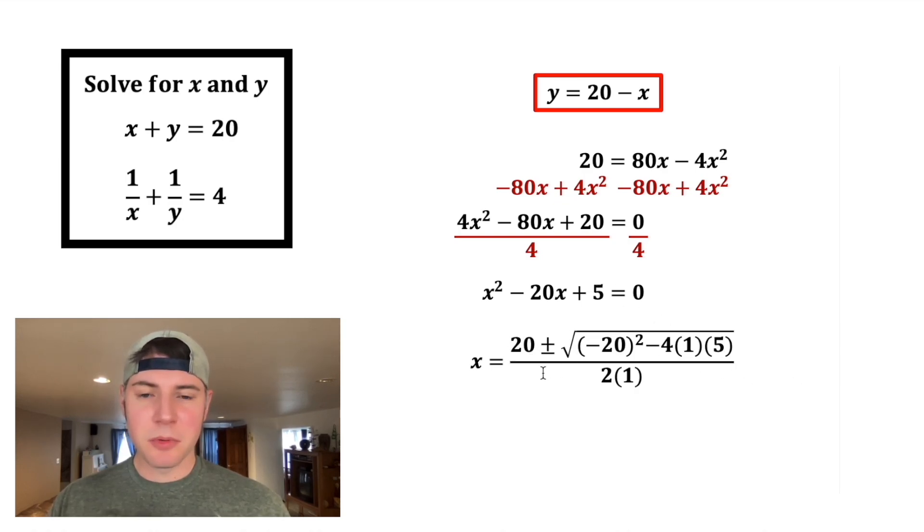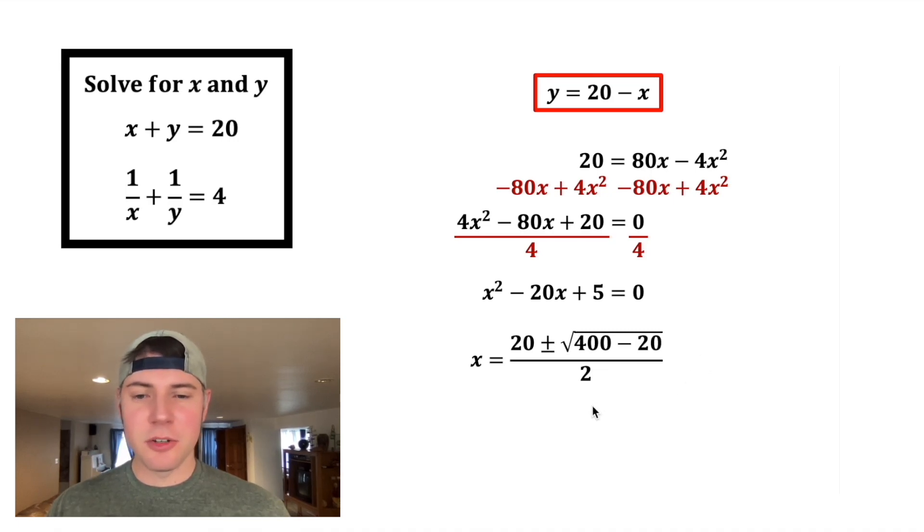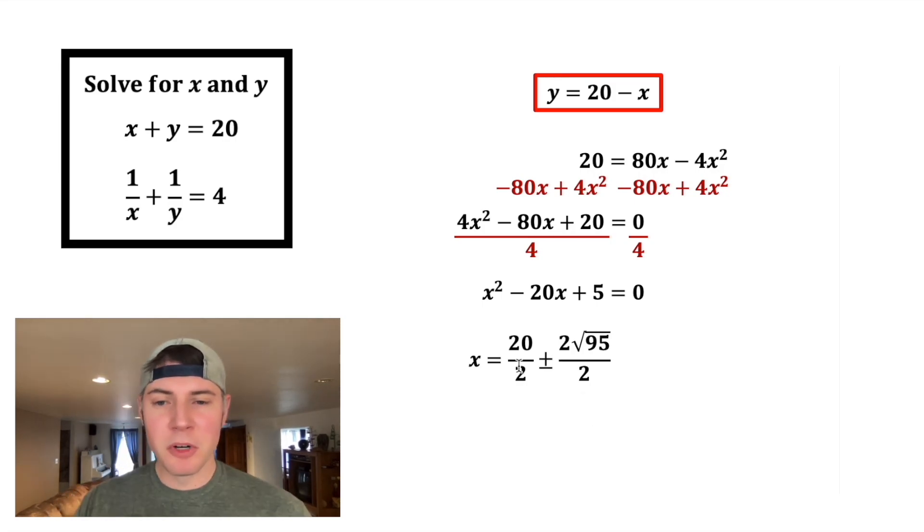Negative negative 20 becomes positive 20. Negative 20 squared is 400, and 4 times 1 times 5 is 20, and this is 2. 400 minus 20 is 380. 380 can be broken down into 4 times 95, and this can be broken down to two separate square roots, where the square root of 4 is equal to 2. We can split this into two separate fractions with a denominator of 2. 20 over 2 is 10, and 2 root 95 over 2 is root 95.